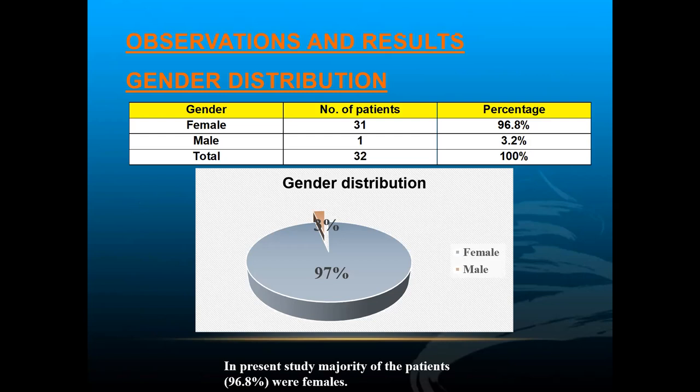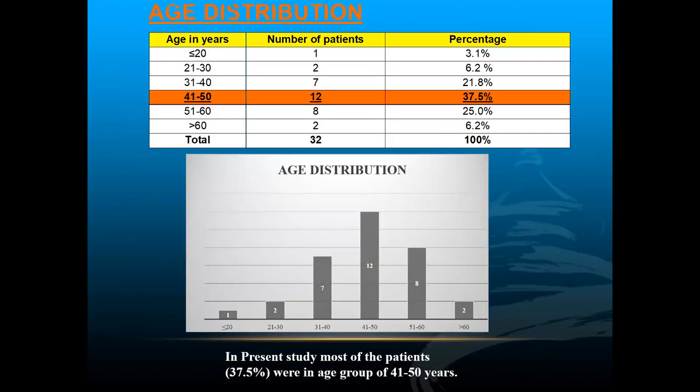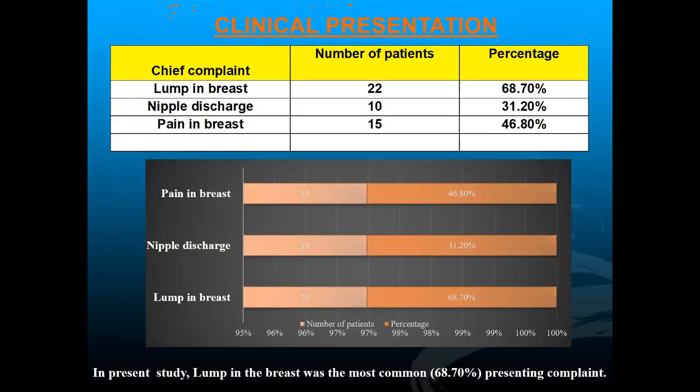Regarding observations: most patients were female — 31 out of 32, constituting 96% of the study. In the age distribution, most patients were in the 41–50 year age group, constituting 37% — that is 12 patients. The most common clinical presentation was a lump in the breast, followed by breast pain.